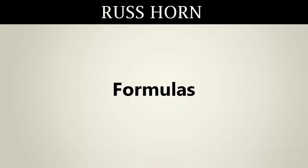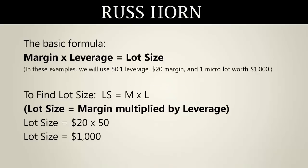The formulas. The basic formula is: margin times leverage equals lot size. In the examples we're going to use, we'll use 50 to 1 leverage, a $20 margin, and 1 micro lot, or $1,000. In order to find the lot size: lot size equals margin times leverage. The margin is $20 and the leverage is 50 to 1. 20 times 50 gives you $1,000, and that is the lot size.